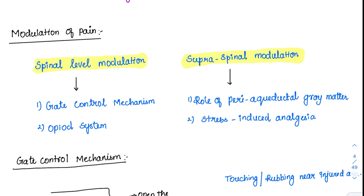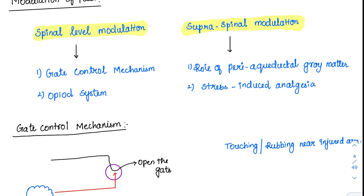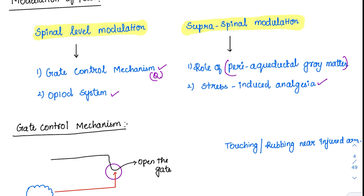At the spinal level, we have two types of modulation: the gate control mechanism, which has been asked in exam questions, and the opioid system. At the supra-spinal level, we have the periaqueductal grey matter — we have already seen that slow pain travels to this region — and another mechanism called stress-induced analgesia. We will discuss them individually now.